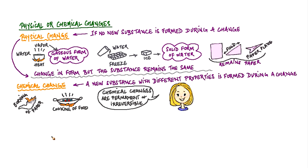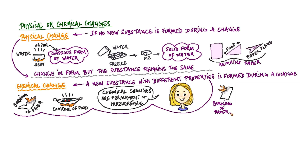Now let's see some common changes around us and what category of change we can slot them into. Burning of paper is a chemical change, as the substance paper is changed into a totally new substance — ash — when we burn it. It is also irreversible, as ash cannot be turned back into paper. Cutting of paper is a physical change where the form of paper changes. You cut a full piece of paper and it remains paper — no new substance is formed. It is however irreversible, as the cut paper cannot be changed back into a full paper sheet.